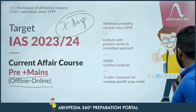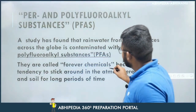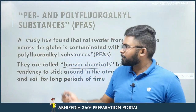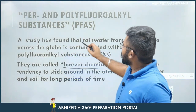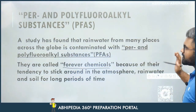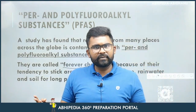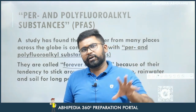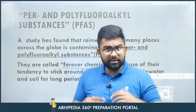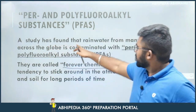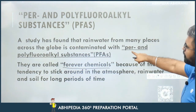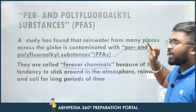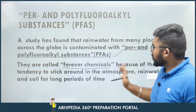Moving on to today's topic — the forever chemicals. Kya hote hain ye? Context dekhte hain ki a study has found that rainwater from many places across the globe — ye global phenomena hai, koi endemic cheez nahi hai, particular geographical area ko cover nahi kar raha — it is global. Across the globe it is contaminated with per and polyfluoroalkyl substances, jinhe PFAS bhi kaha jata hai. These are called forever chemicals.